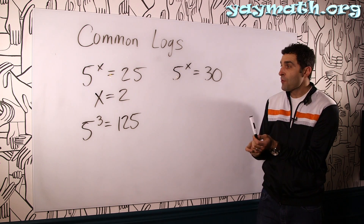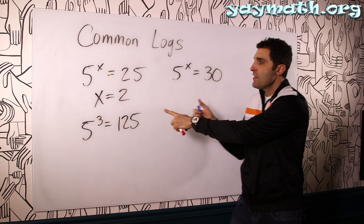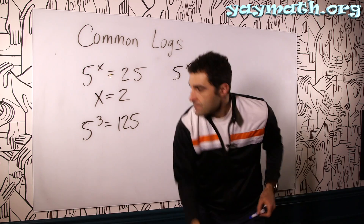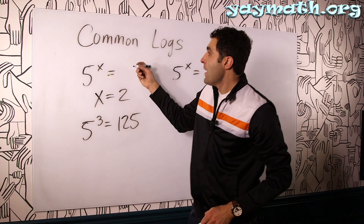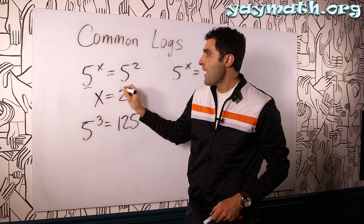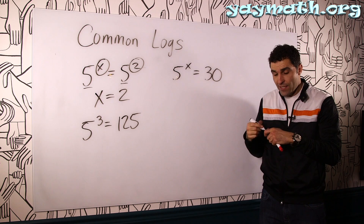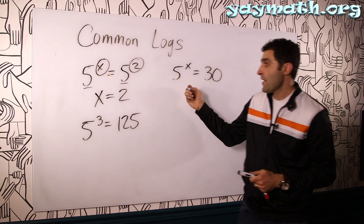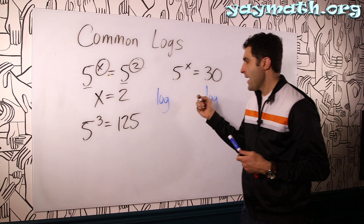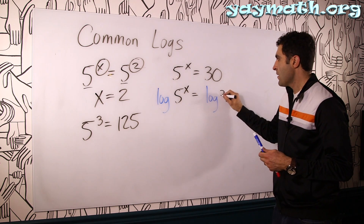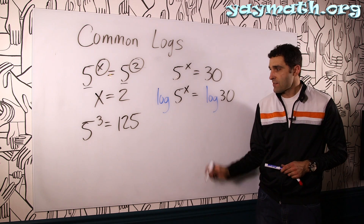Using properties of logs, we are permitted to take the log of both sides of this equation when we can't establish the same base number. In this case, the base number would be 5. With 5 to the x equals 25, we have the same base on both sides, so the exponents would be the same. But here we can't create the same base, so we take the log of both sides — log over here, log over here — and we get log of 5 to the x equals log of 30.